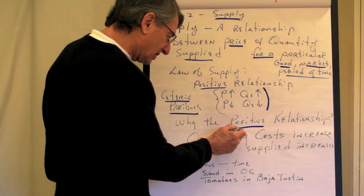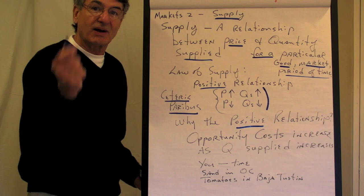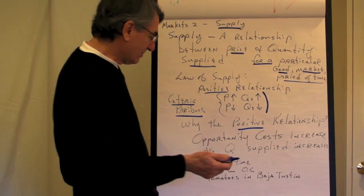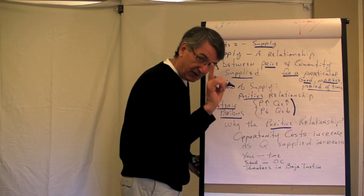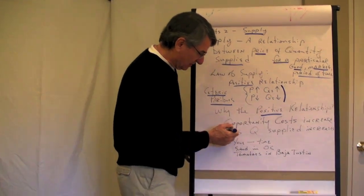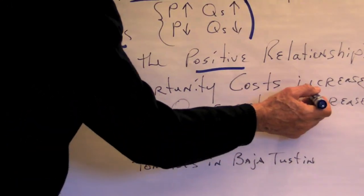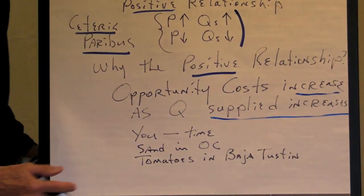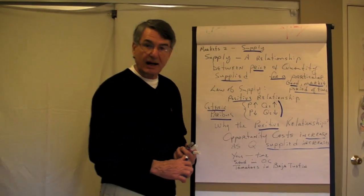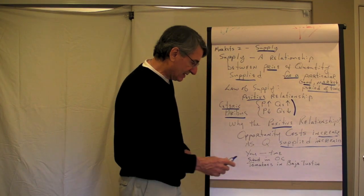But this just shows the relationship between price and quantity supplied, assuming everything else is constant. Why is this relationship positive? Remember, with demand, we asked why is that relationship negative? Now we're asking why is the supply relationship positive? And the answer is that, generally speaking, opportunity costs increase as quantity supplied increases. To produce more, you incur higher opportunity costs.